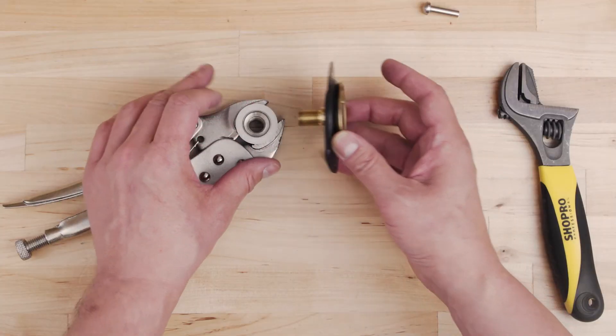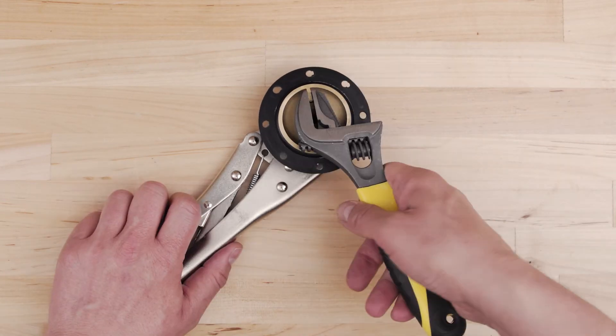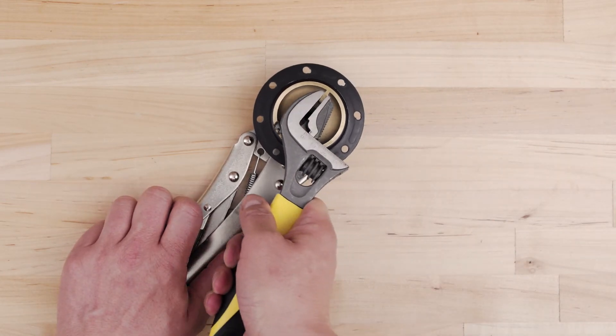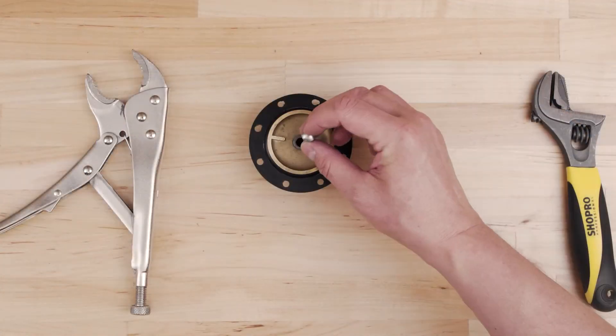Next, align the washer on the bottom piece and screw the assembly together. Use the adjustable wrench to tighten the pieces together. Now, remove the tape from the shank and replace the poppet pin.